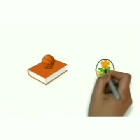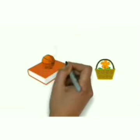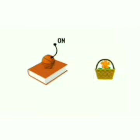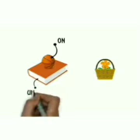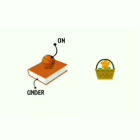Here is a book, ball, flower, basket. Where is the ball? Ball kahan hai? Book ke oopar. Oopar ki English is on. And where is the book? Book kahan hai? Ball ke neechay. Neechay ki English is under. U-N-D-E-R, under.